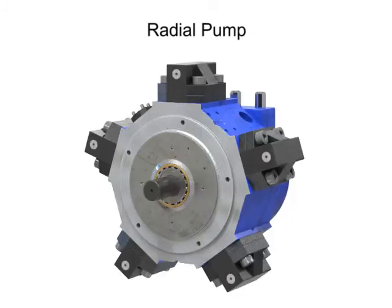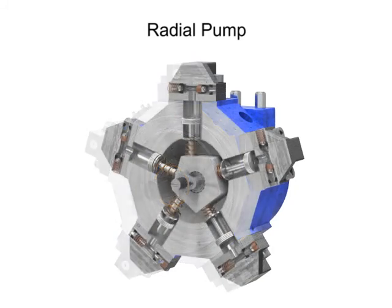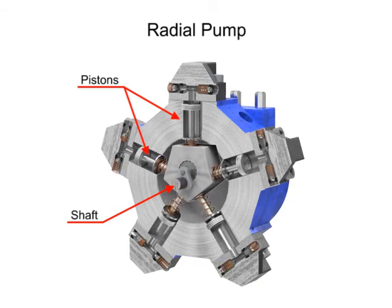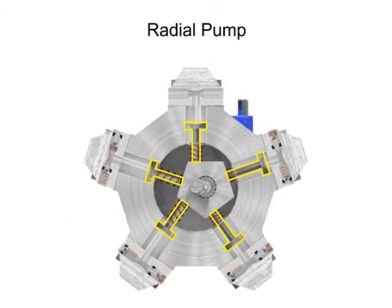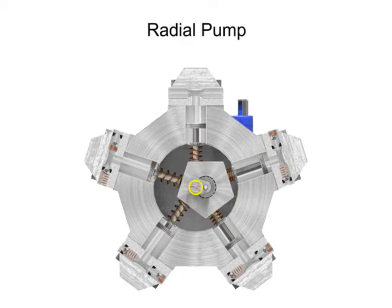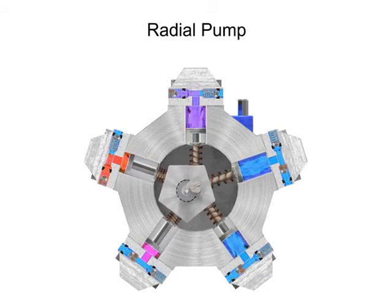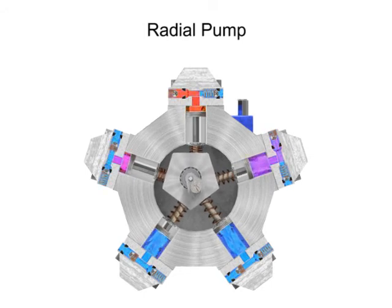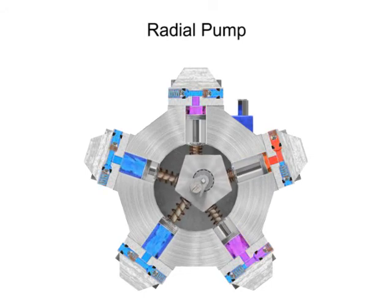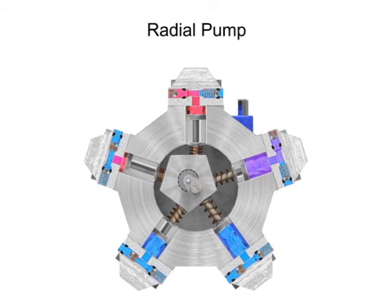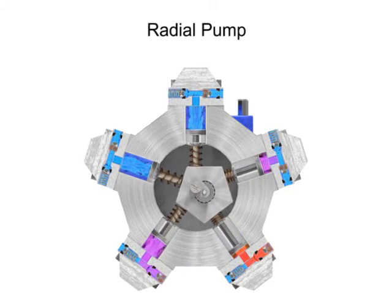Radial pumps are designed so the pistons stroke in a direction at right angles to the shaft. The pistons are arranged like wheel spokes around a cylinder block with an eccentric central cam mounted on a drive shaft. As the shaft rotates, the cam moves towards the pistons, forcing them down into the cylinder block and discharging the fluid. As the cam moves away, springs help retract the piston and cause the intake stroke. Check valves ensure that fluid only enters the inlet ports and only exits the outlet ports.